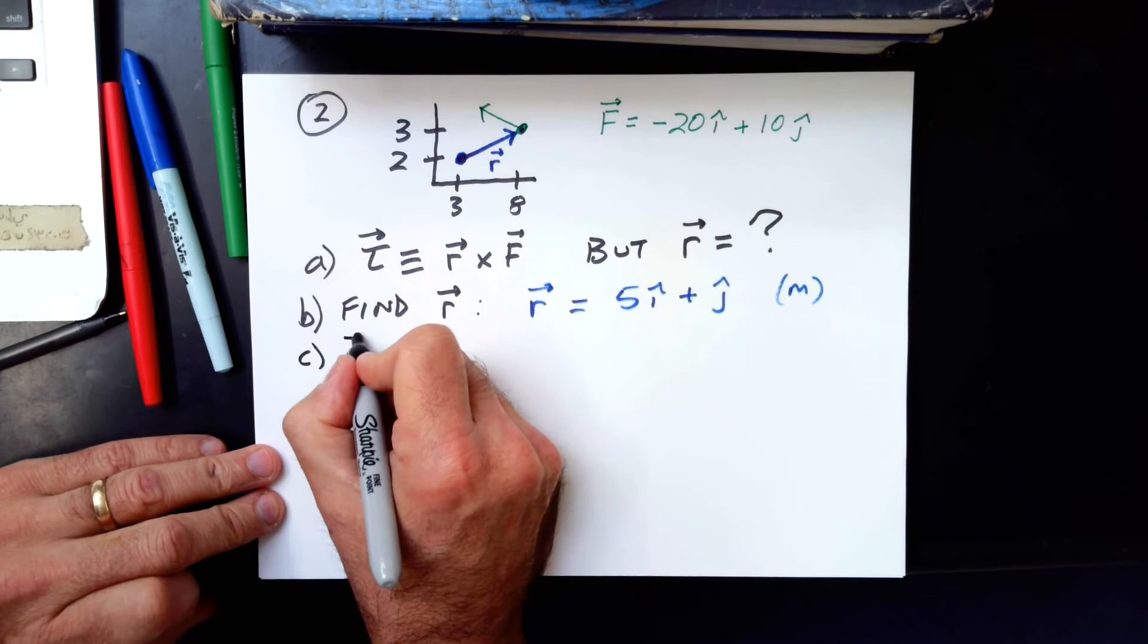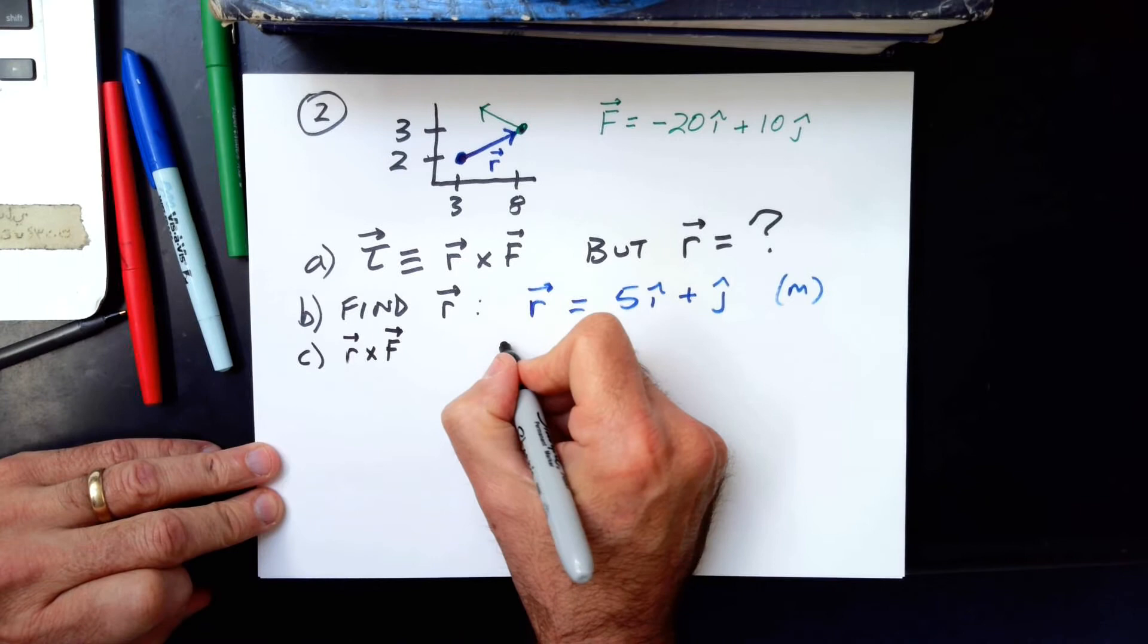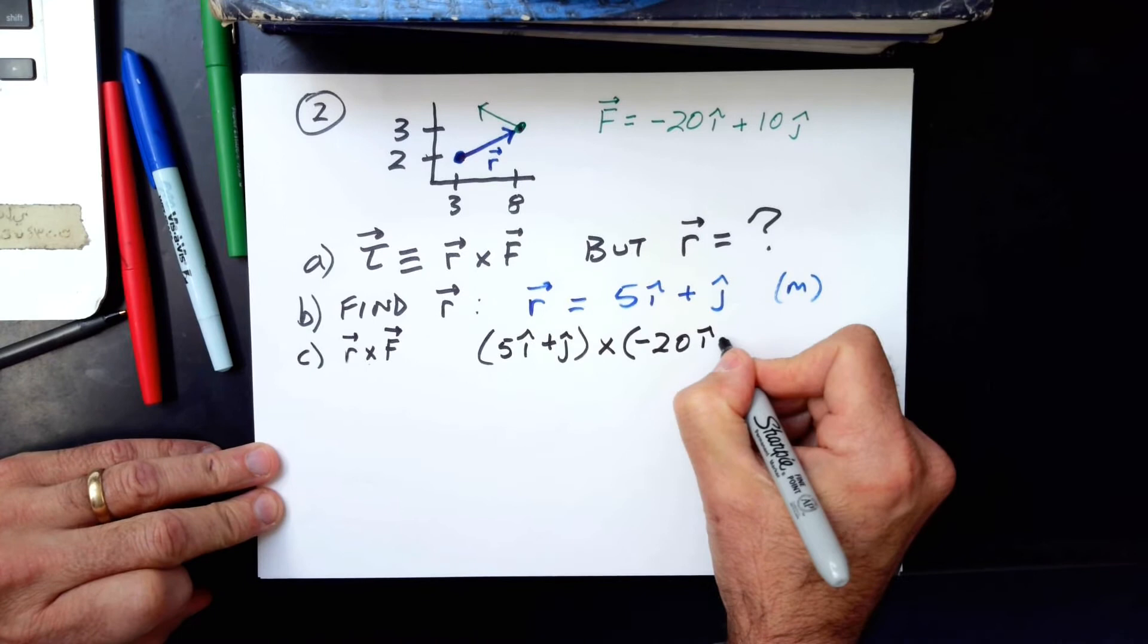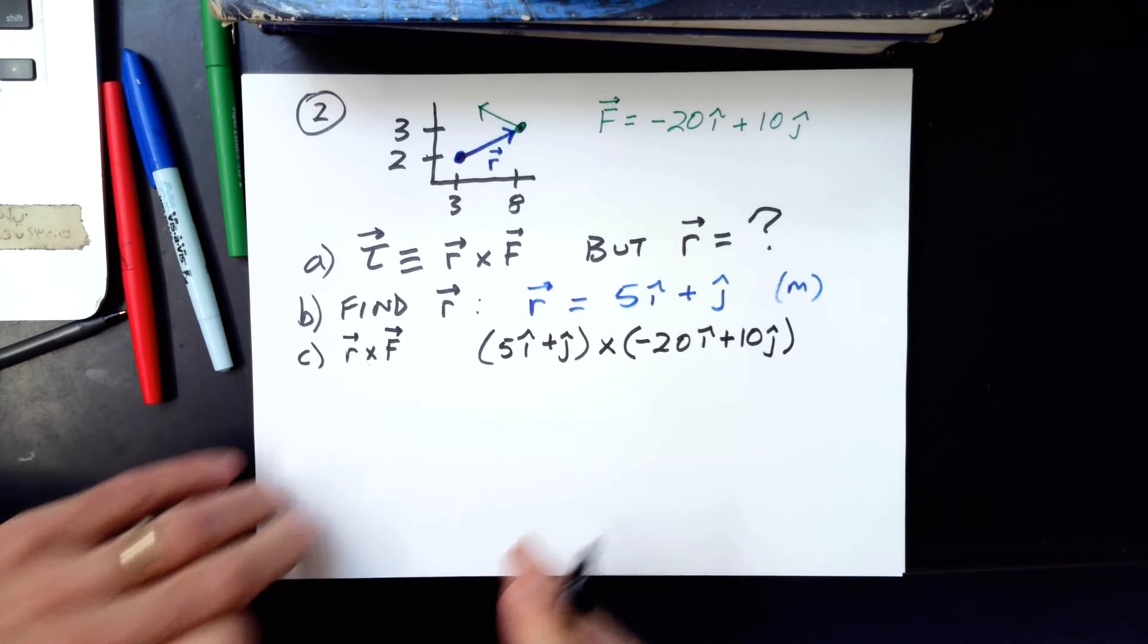It's R cross F. Let's see how to do that. Well, we have something for R. So let's write that 5I plus J. And then the cross symbol. And then we have something for F. Negative 20I plus 10J. Now we're going to do the cross product of these two vectors.